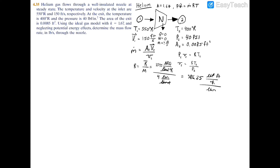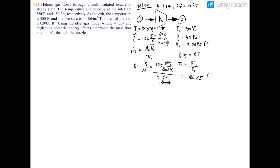To simplify the units further, recall that a pound-force equals pound-mass times feet per second squared. Substituting, our feet multiply to give feet squared, and we end up with R equals 386.25 ft²/s²·°Rankine. Now we can plug into our formula for specific volume.